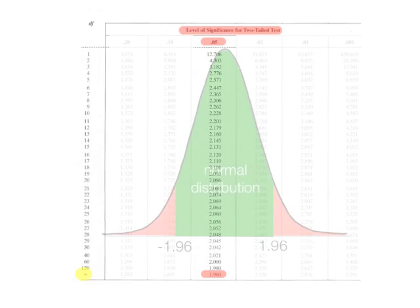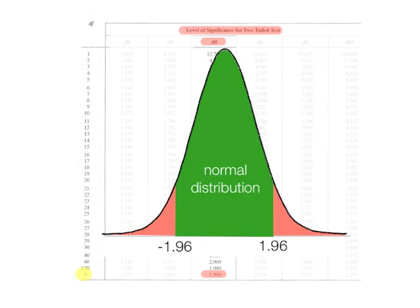Now, at very large samples, infinity or anything larger than 100, the critical value is 1.96. And it's exactly the same as the normal distribution, or theoretically the same, I should say.